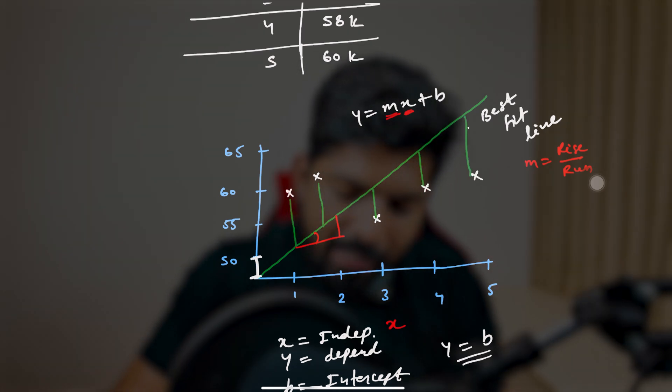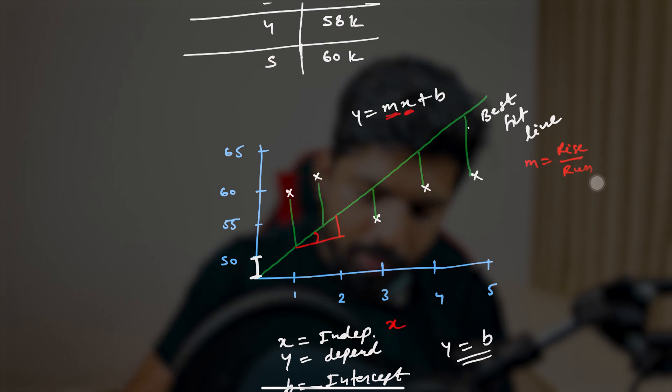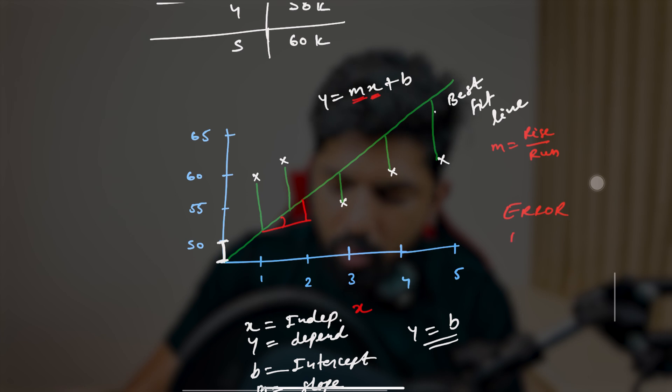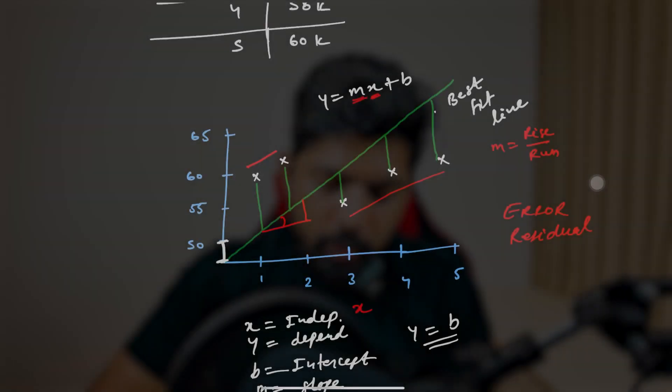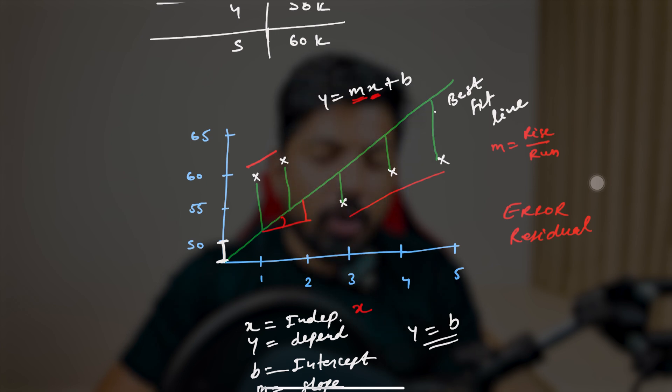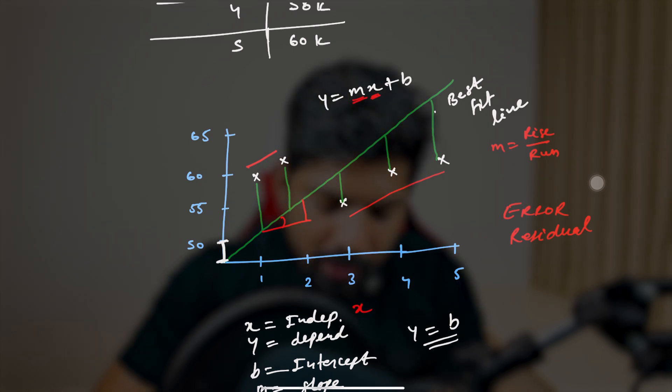This distance between the actual point and the predicted line is known as the error or the residual. When we add all these errors they should equal zero. These are the original points (the inputs we have) and this is the line we predicted. The ideal situation would be the line overlapping exactly on these points, but that's not possible here. The difference between the original and the predicted value is the error.